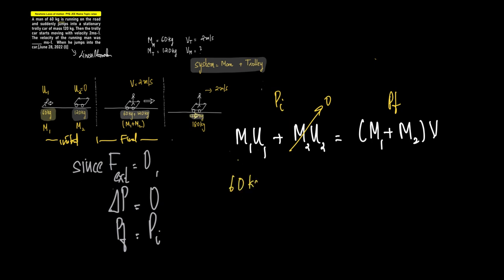So 60 kg u1 equals m1 plus m2. m1 plus m2 here is 60 plus 120, so m1 plus m2 is 180. This becomes 180 into v. v is the common velocity by which both man and trolley as a system move, which is given to us as 2 meters per second. So this is into 2, and therefore u1 equals 180 to 360 upon 60, which is equal to 6 meters per second. Which means that the man was running with the velocity of 6 meters per second.